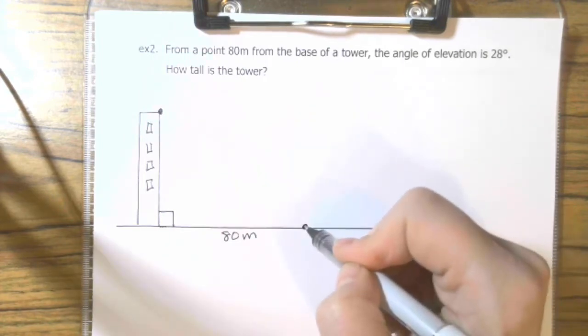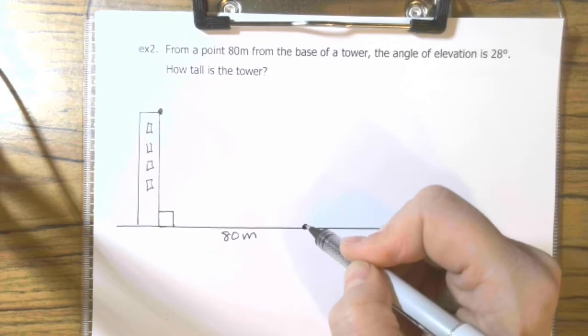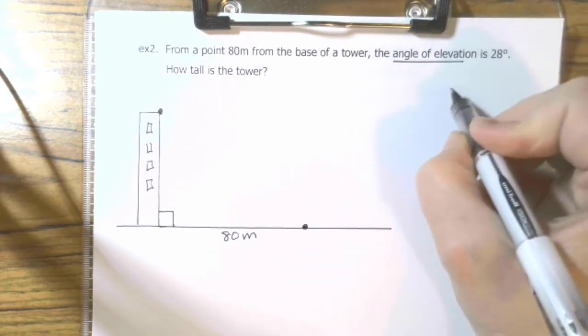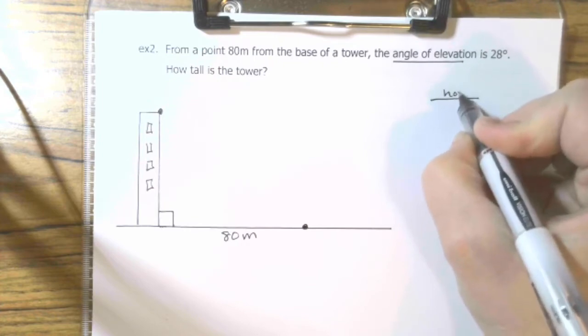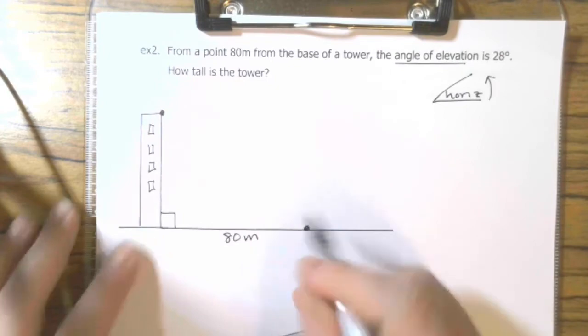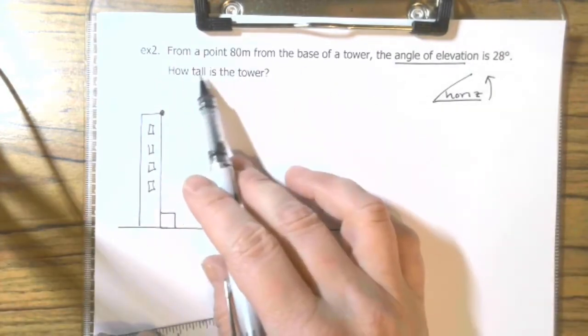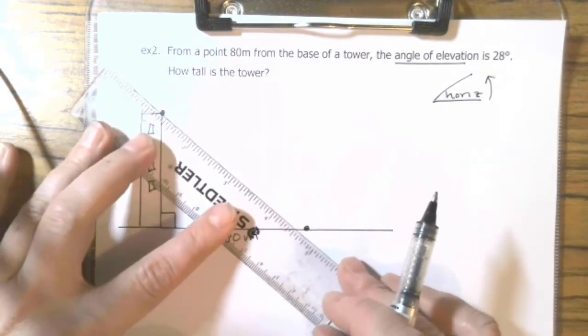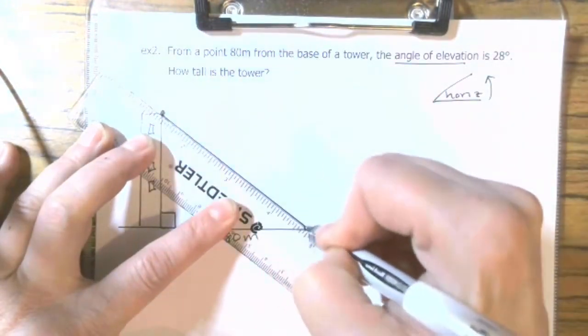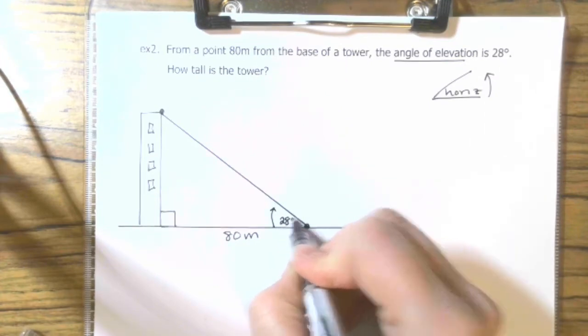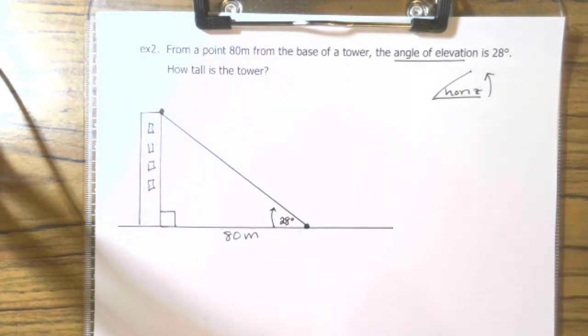And, we're going to make the assumption that the tower is perpendicular. It's not the leaning tower of Pisa. So, from this point, 80 meters from the base of the tower, the angle of elevation. So, angle of elevation, remember, is from the horizontal. And, then you go up from there. So, the angle of elevation, so, from a point of the angle of elevation to the top of the tower is 28 degrees. Okay. So, from horizontal up is 28 degrees. How tall is the tower? So, I'm looking for the height of the tower.